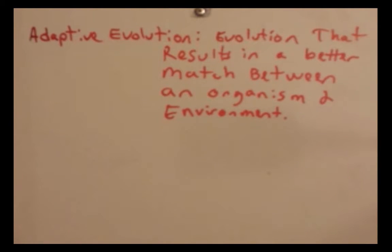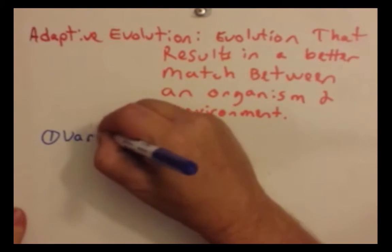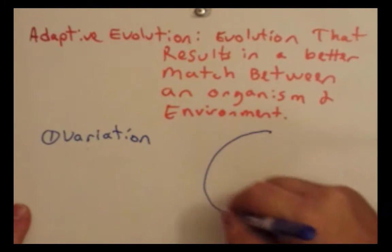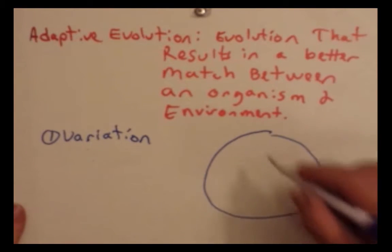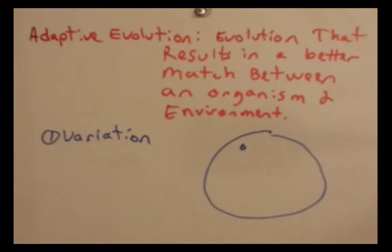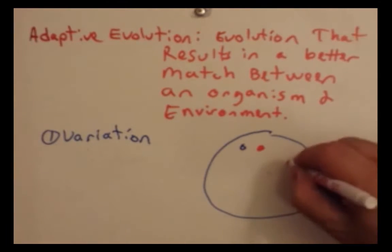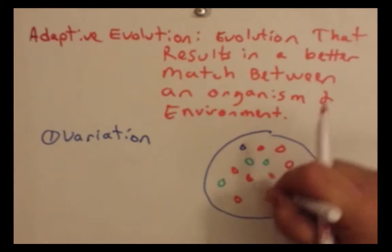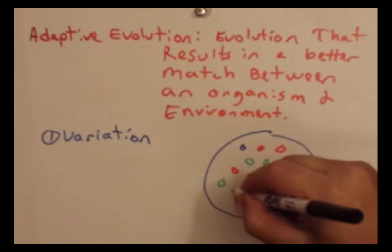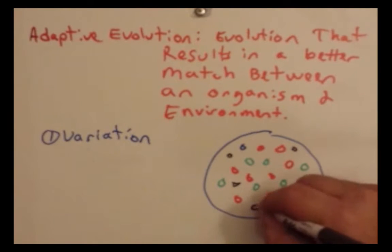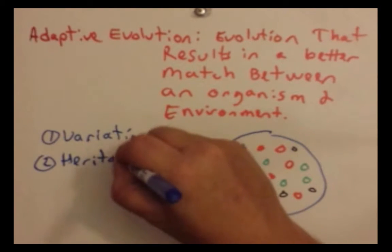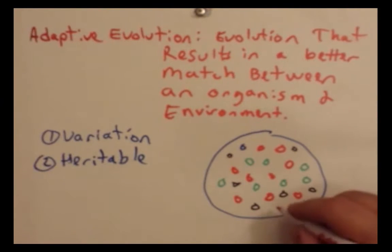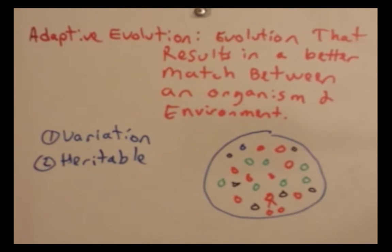Adaptive evolution requires three things. The first is variation. I'm going to draw a diagram to illustrate these three things. Think of a petri dish with many different kinds of bacteria growing in it — all the same species, but colored differently to show that they have different traits, that they have variation. The next thing is that this variation has to be heritable, meaning that when a bacterium reproduces or divides, it produces two new ones of the same kind. So the trait of being red can be passed on to its progeny.